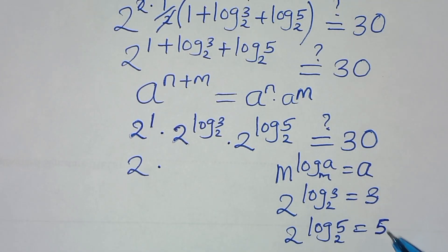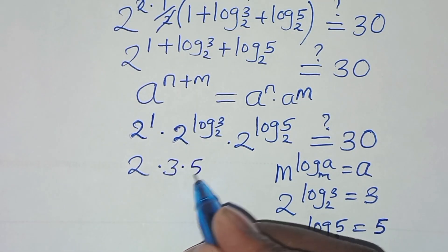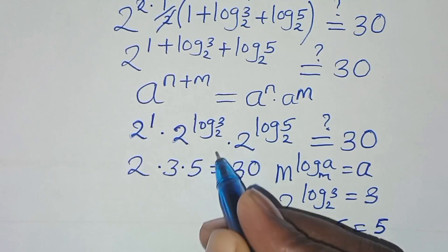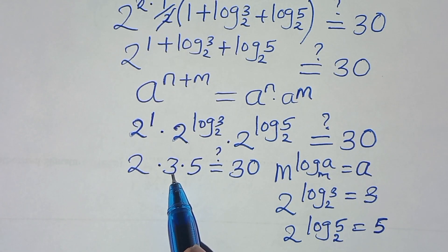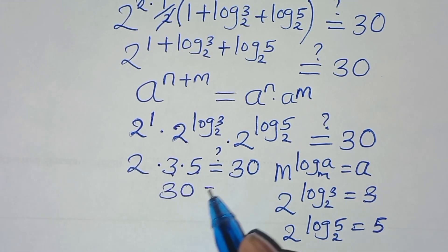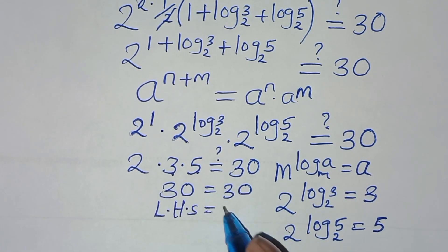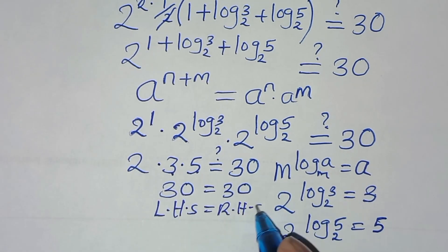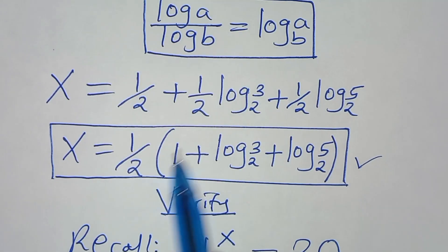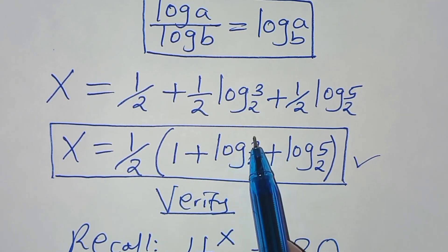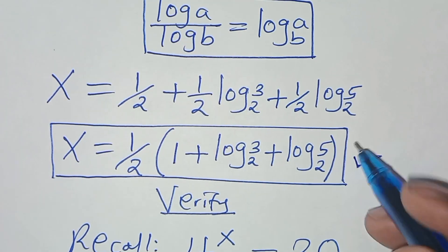Substituting 3 and 5, we have 2 times 3 times 5, which should equal 30. And indeed, 2 times 3 is 6, and 6 times 5 is 30, which equals 30. The left-hand side equals the right-hand side, confirming that x equals one-half times (1 plus log₂3 plus log₂5) satisfies the equation.